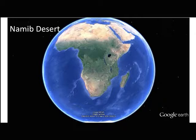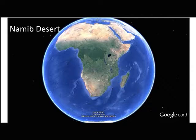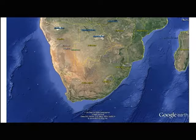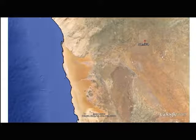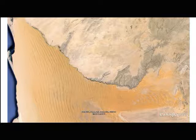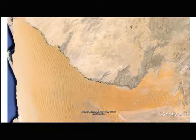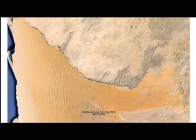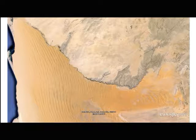The cool thing about working at this field site is you can see it from space. This is the Namib on the western coast of Africa in southern Africa. You can see the sand dunes emerging. The whole coast of Namibia is called the Namib Desert — a coastal desert. The central and southern half form what's called the Namib Dune Sea, a large area of linear dune systems. The sand originates from South Africa and forms these dynamic dunes moving toward the ocean.